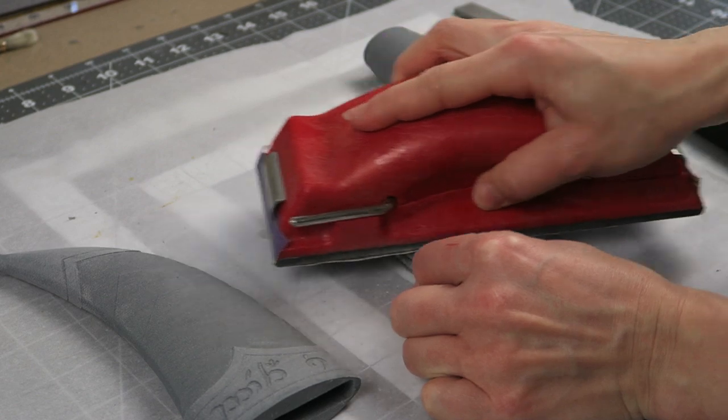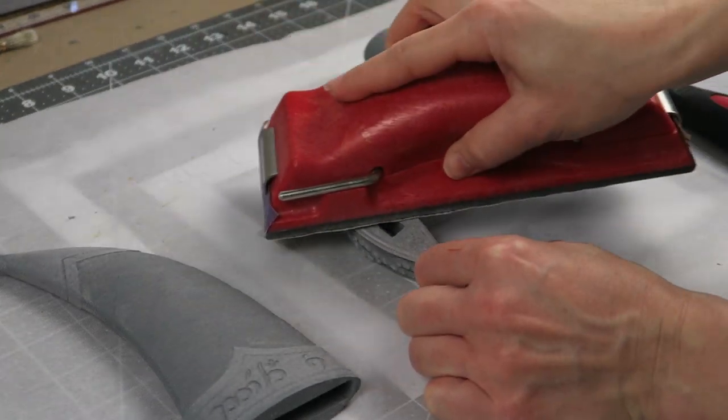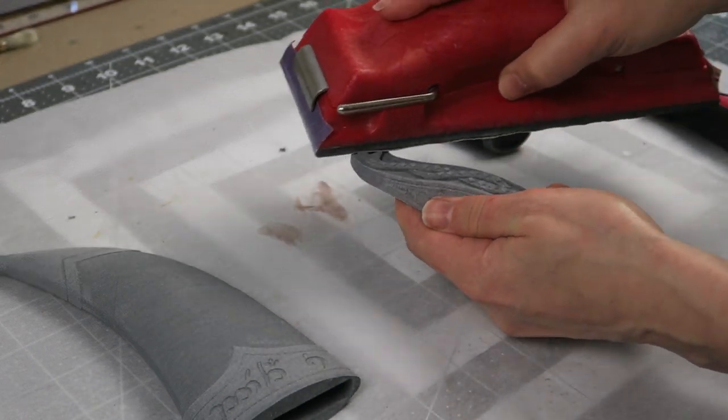I also sanded that base where the supports were and a little bit on the top too because of the angle I printed it at there were some print lines there so just smooth that out.